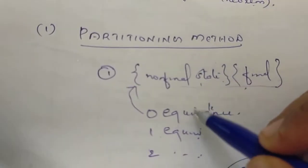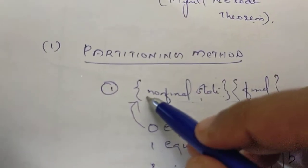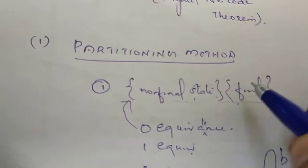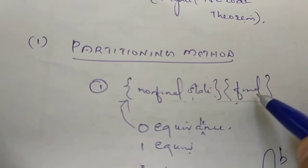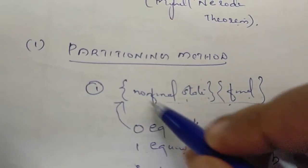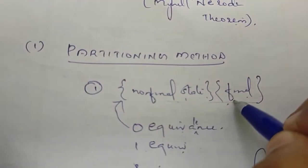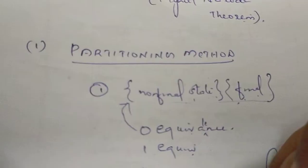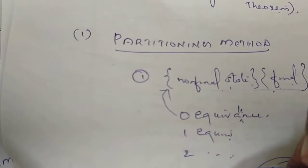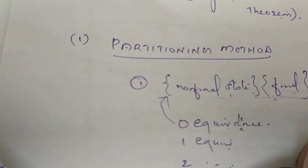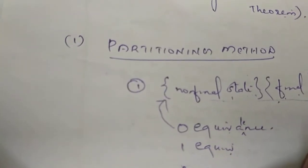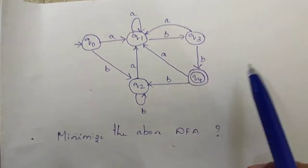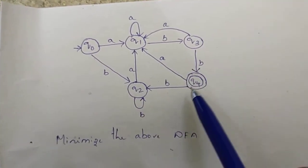Using the equivalence method, we start with zero equivalence: we separate non-final states and final states. Then we compute one equivalence and two equivalence, continuing until no further partitioning occurs. Here is our example question — a DFA to minimize.